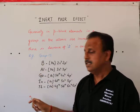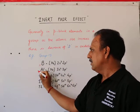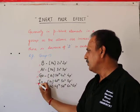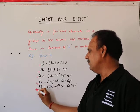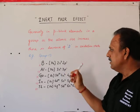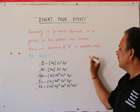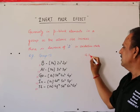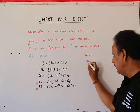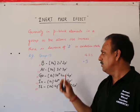Group 13 has atomic numbers 5, 13, 31, 49, and 81. There are three electrons in the outermost shell, so the general oxidation state is +3. This is the common oxidation state.